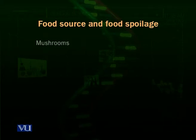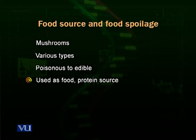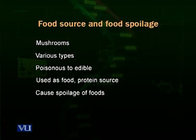Fungi are also a food source. Mushrooms are enjoyed by many people in salads and various dishes — they are a very important source of protein, particularly in areas where animal-source protein is scarce. However, edible mushrooms are costly because they are difficult to grow and difficult to distinguish from poisonous species. On the negative side, fungi cause spoilage of foods — bread molds, vegetables, and fruits — so they are both beneficial and harmful.